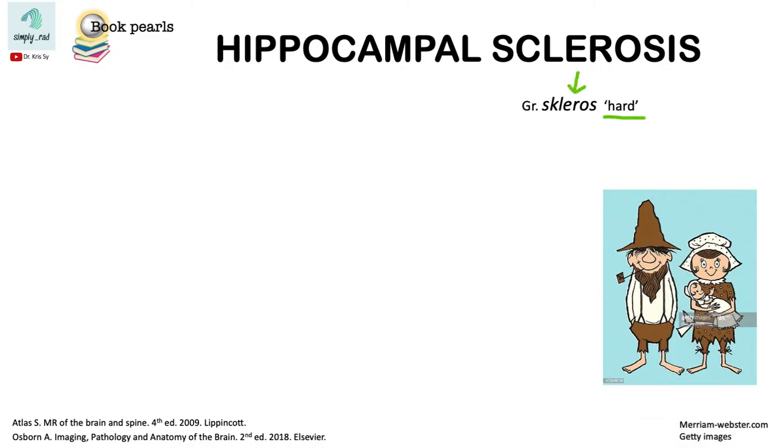Sclerosis comes from the Greek word skleros, which means hard. So in medicine, it means tissue hardening due to replacement of the normal tissue by fibrosis.